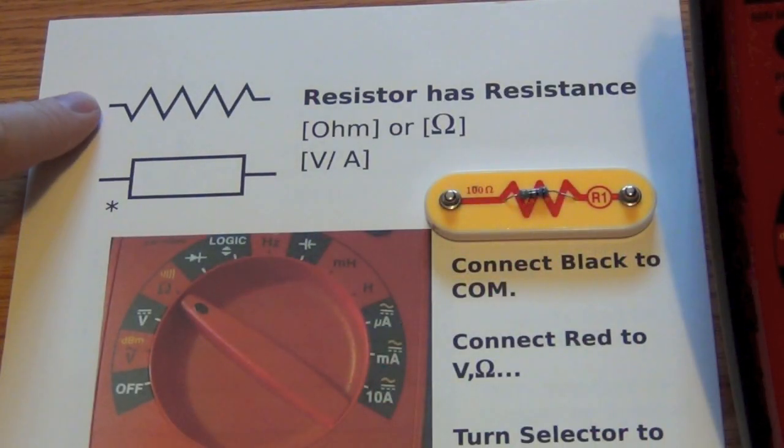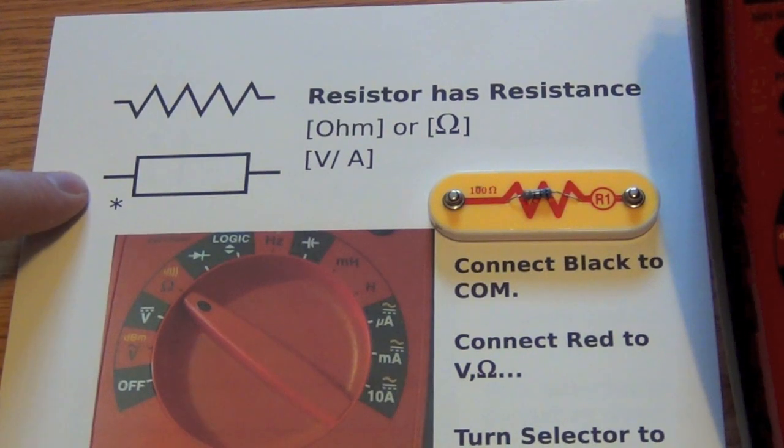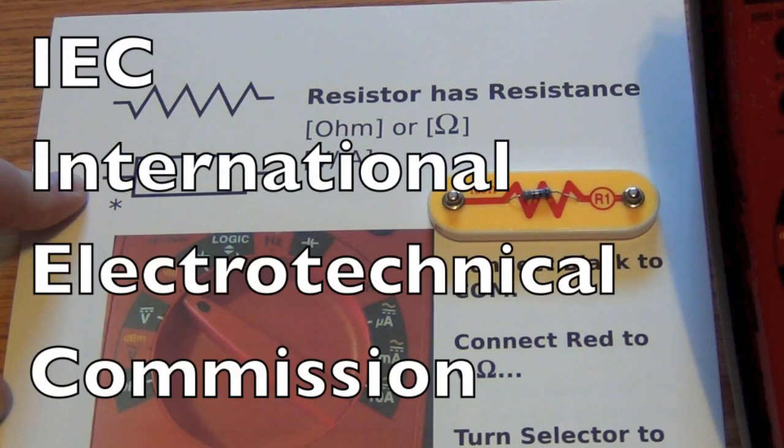A resistor has a symbol like this or like this. This symbol, by the way, is used by the International Electro-Technical Commission, the IEC.